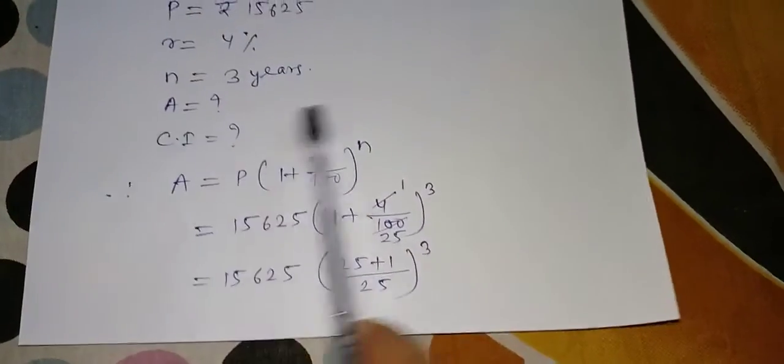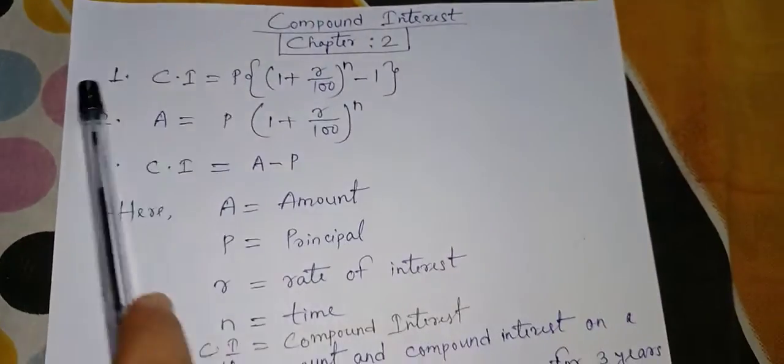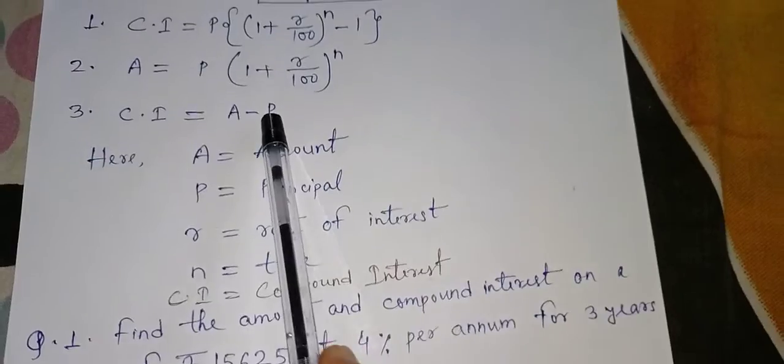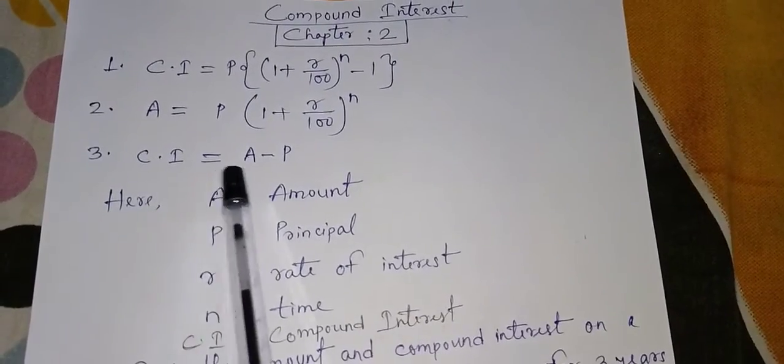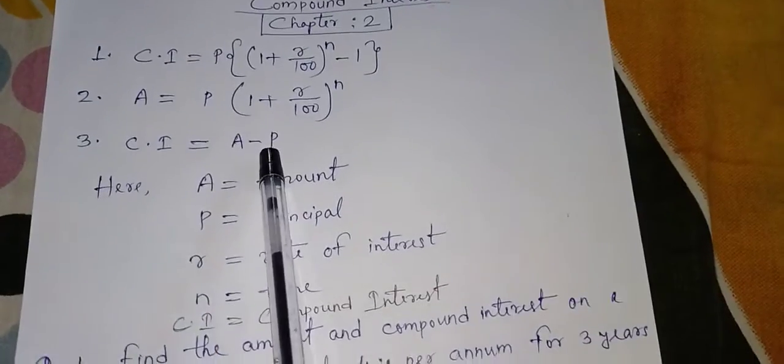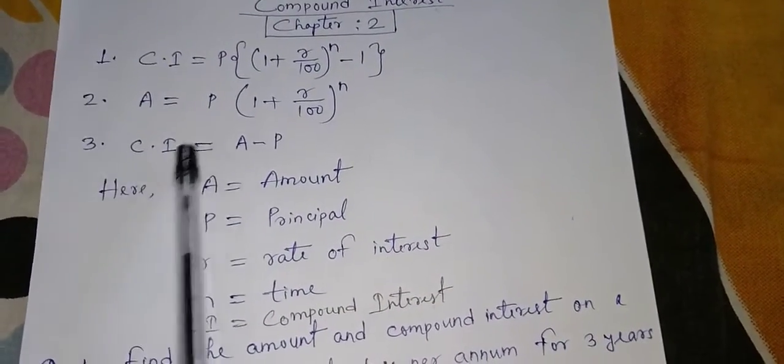First question was to find amount. So I have got the amount. Next is to find compound interest. Now compound interest formula, we have 2 here. But number 3 will be very easy to use. Why? Because when we have the value of amount, no need to use number 1. So I use this formula, compound interest equal to A minus P.